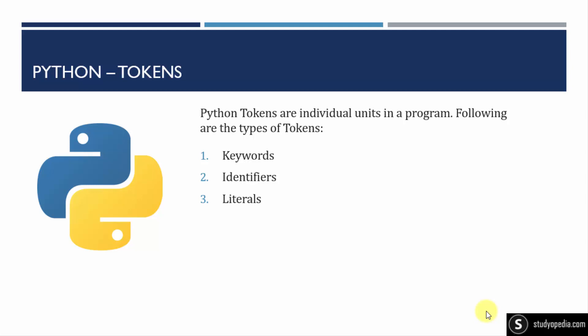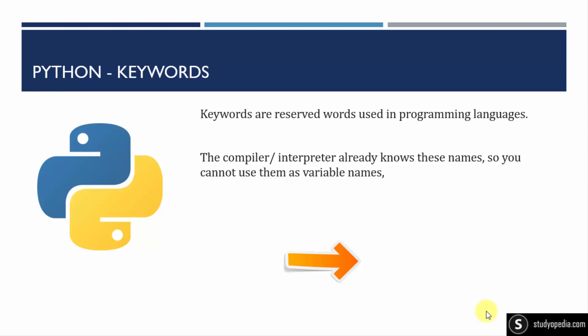Firstly, keywords. Keywords are basically reserved words in programming languages, and the same goes for Python. The compiler or interpreter knows these names already. Examples include while, if, else, break, and continue. There are some other keywords as well.